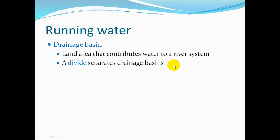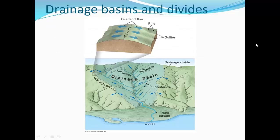Running water. Drainage basins. A drainage basin is a land area that contributes water to a river system. A river and all its streams and tributaries collect the water that falls on that land surface from rain. The boundary between drainage basins is called a divide — usually a high point of land around the basin.